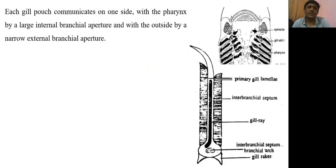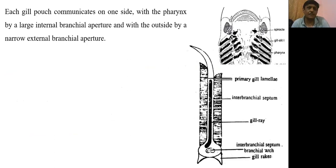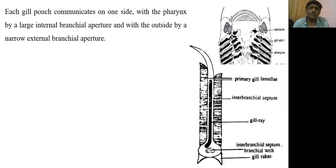Each gill pouch communicates to the outside and also with the pharynx. On the side toward the pharynx, the gill has a large aperture called the internal branchial aperture. When the gill pouch opens to the outside, there is a narrow external branchial aperture. So the gill pouch has two apertures: one toward the pharynx — a large internal branchial aperture — and one to the outside — a narrow external branchial aperture.